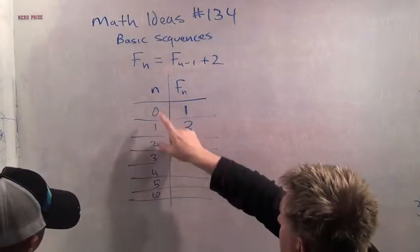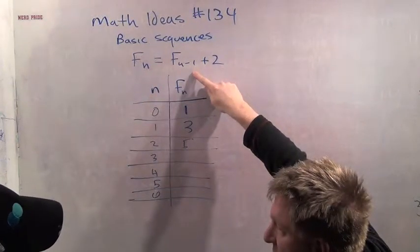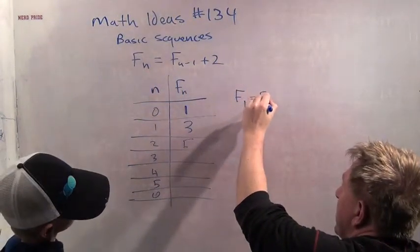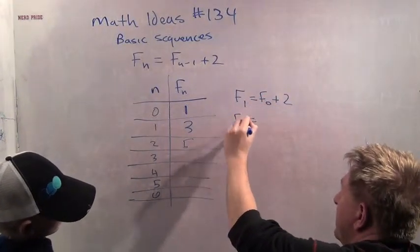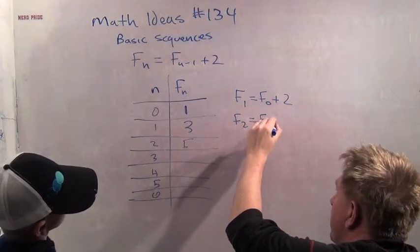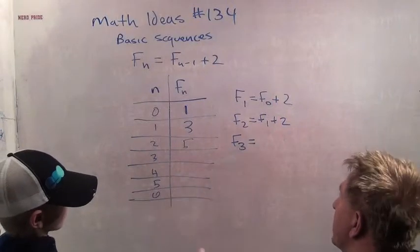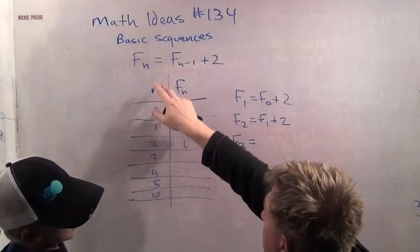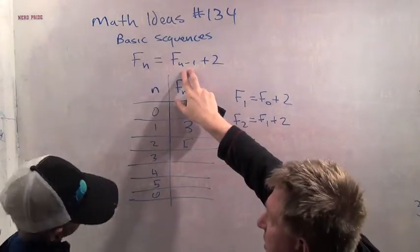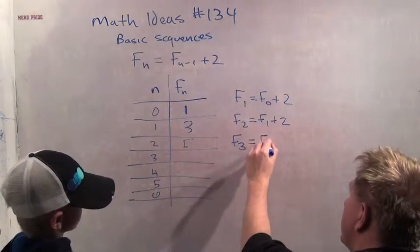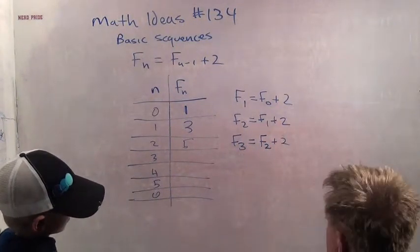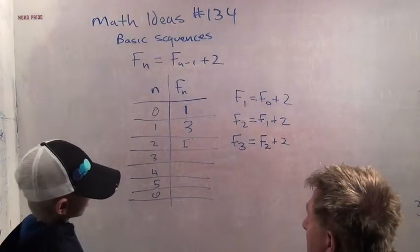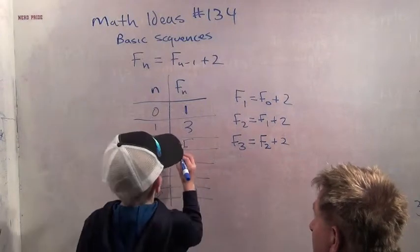So what does our sequence say F3 is? F sub 3 equals F sub... When N equals 3, F2 equals F1 plus 2. What do you think F sub 3 equals? When N equals 3, what does N minus 1 equal? 3 minus 1? 2. So F3 equals F sub 2 plus 2. What is F2? F2 is 5. What is 5 plus 2? 7. Awesome.